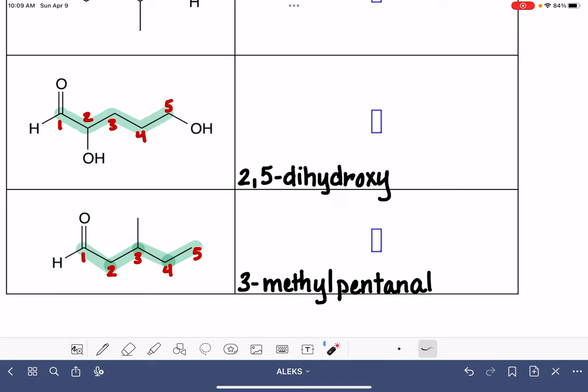Whenever we have two identical substituents, we can lump them together and just put the di prefix in front of them. That means we have two of that identical substituent. This is also a five-carbon aldehyde, so this is also a pentanal.